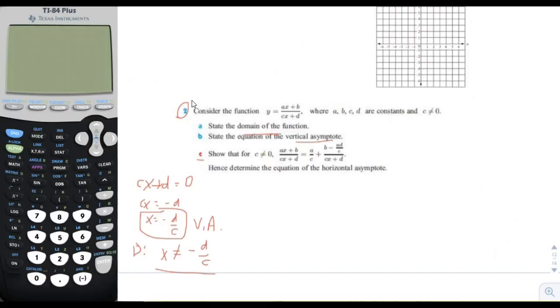Show that for c not equal to 0, ax plus d over cx plus d equals a divided by c plus blah, blah, blah. Hence, determine the equation of the horizontal asymptote. So I'm going to show you first why this is useful before we go through all the trouble of trying to figure this out. So why is it useful to have this expression here, a over c, blah, blah, blah? Why is that better than this one?